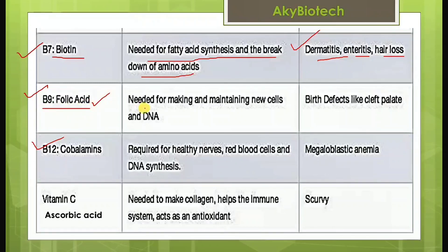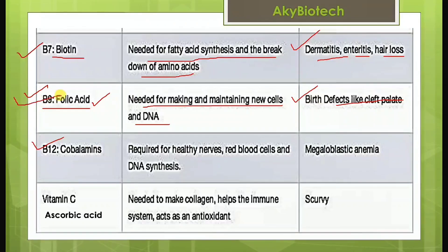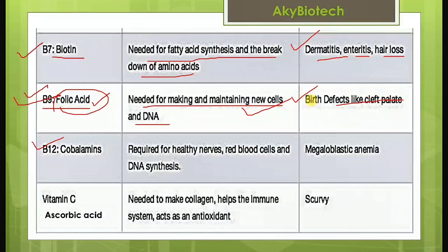Vitamin B9 is folic acid. It is needed for making and maintaining new cells and DNA. Its deficiency leads to birth defects like cleft palate. As discussed in an earlier video, folic acid is given to pregnant women during early stages of pregnancy to prevent such birth defects.